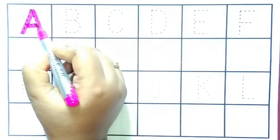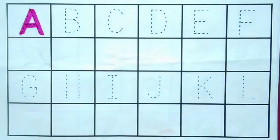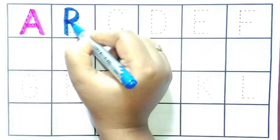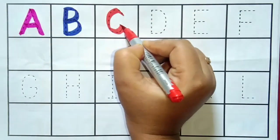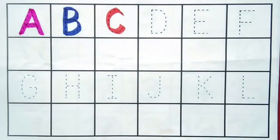A. A for Aeroplane. A for Aeroplane. B. B for Ball. B for Ball. C. C for Cat. C for Cat.